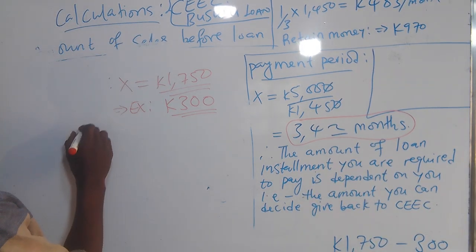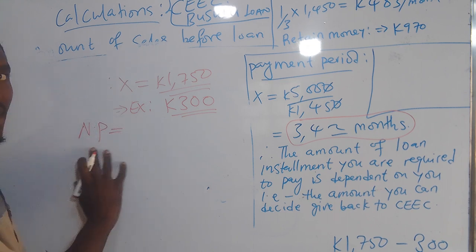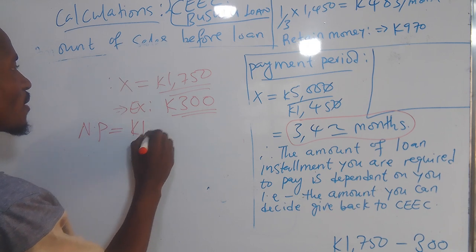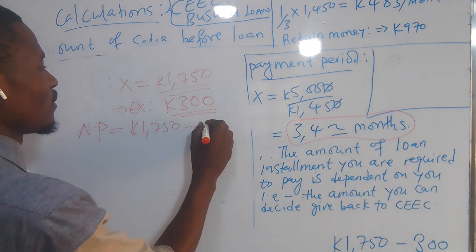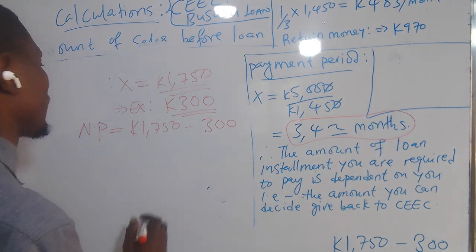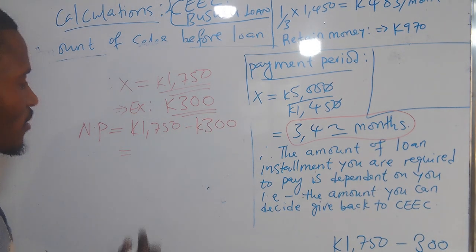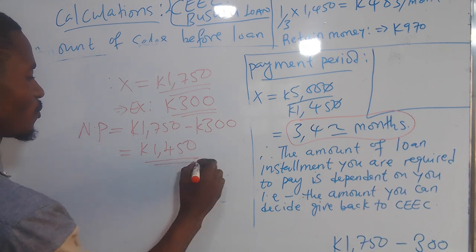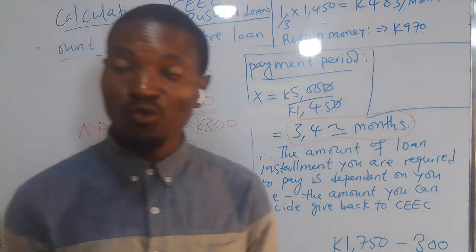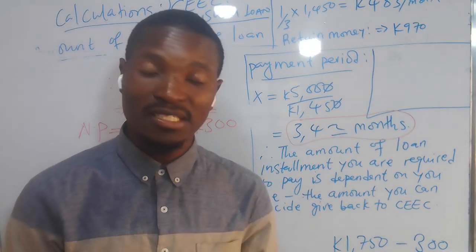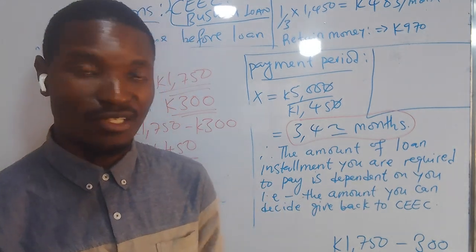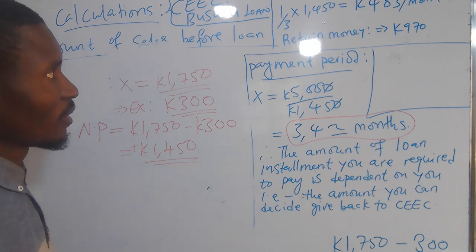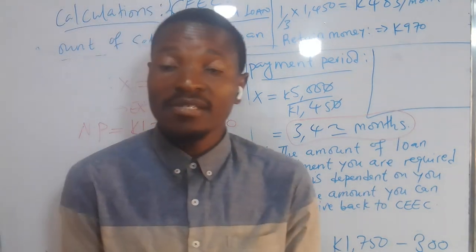So the net profit — how much money you'll actually be making — is sales minus expenses. That gives us 1,750 minus 300, which equals 1,450 kwacha. This is the true value of your net profit. Since it is positive, your business is making a profit, not a loss.